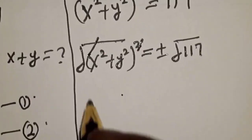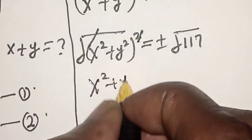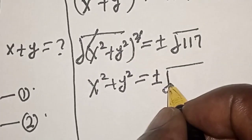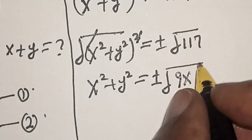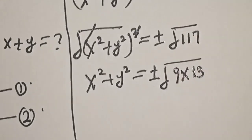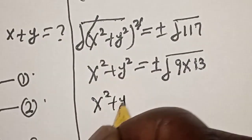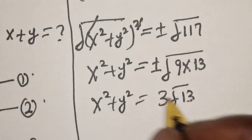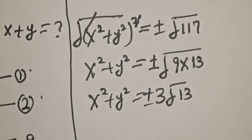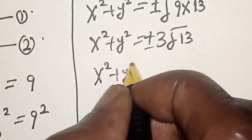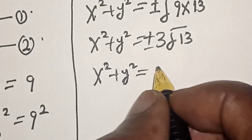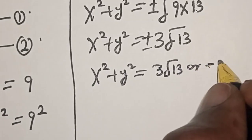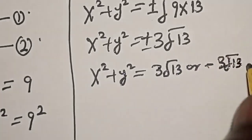The square cancels with the square root, leaving us with x squared plus y squared is equal to plus or minus square root of 9 times 13, which is plus or minus 3 root 13. So x squared plus y squared is equal to either 3 root 13 or minus 3 root 13.